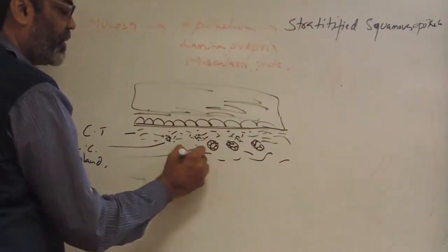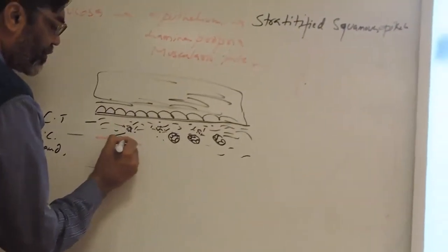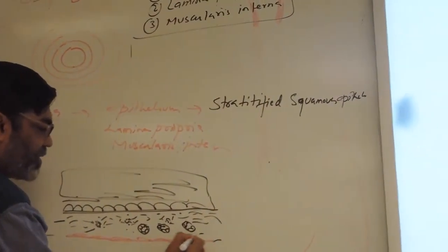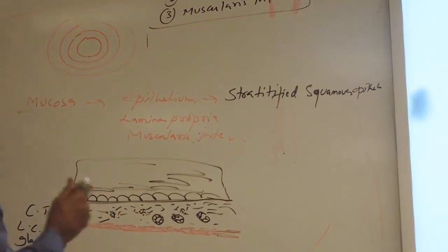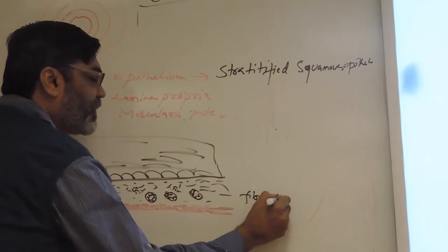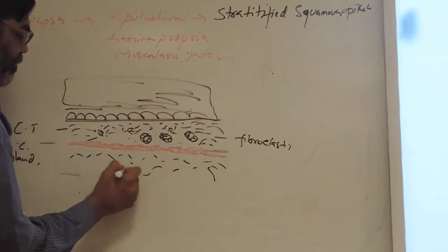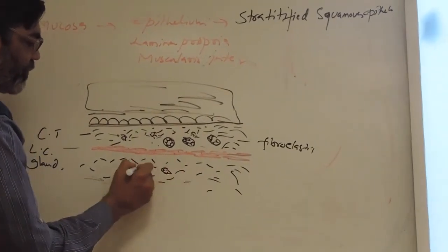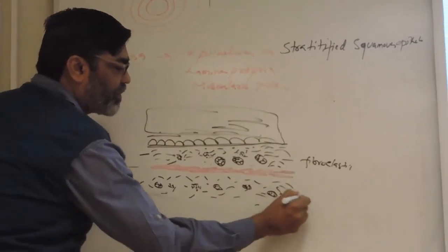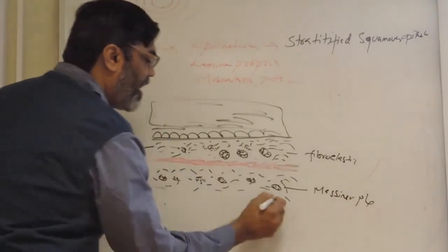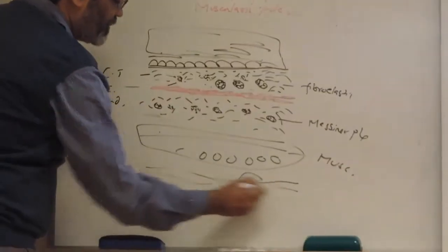Below the lamina propria we have a thin layer of muscle — muscularis interna. We also have elastic fibers, so the connective tissue is fibroelastic with collagen and elastic fibers. Then we have the submucosa with nerve plexuses, and then the musculosa with inner circular and outer longitudinal layers. Finally, adventitia — a connective tissue layer — is the most outside layer.